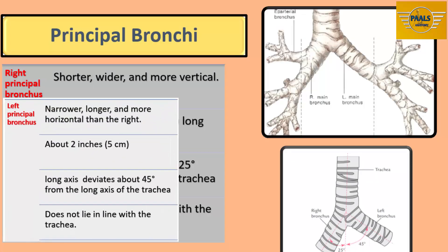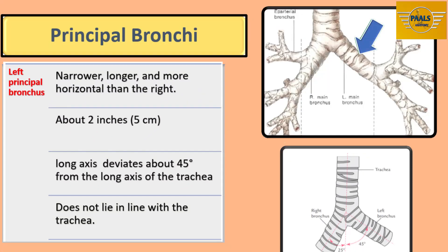The left principal bronchus is narrower, longer, and more horizontal than the right — about 2 inches (5 cm) long. Its axis deviates about 45 degrees from the long axis of the trachea, so it lies further away from the line of the trachea. This has a lot of clinical significance, as will be explained in part three of this lecture.